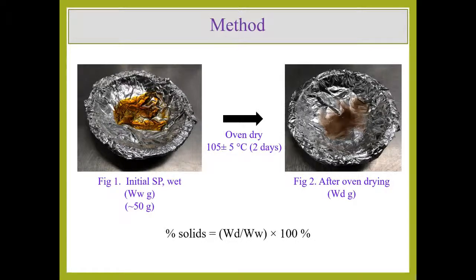Coming to the test procedure, the test procedure is very simple. We take a known quantity of the chemical in the initial state, which I have mentioned here as wet state, a known quantity WW, for example 50 grams, take it in a container which is okay to be placed in an oven at 105 plus or minus 5 degrees C. It is better to take some metal container or a normal steel cup or a plate.